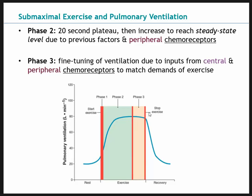Phase three is fine tuning of ventilation. We're still at steady state, following the blue line into this orange/tan region. Now both central and peripheral chemoreceptors are engaged. This is simply to match the demands of exercise — the body needs continuous oxygen and needs to rid itself of CO2. Fine tuning ensures ventilation is appropriate for the submaximal exercise being performed.